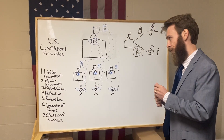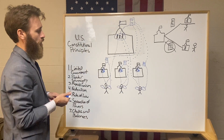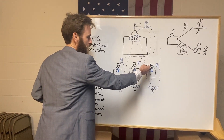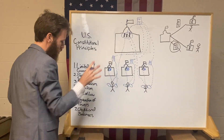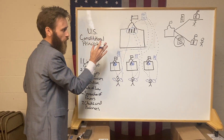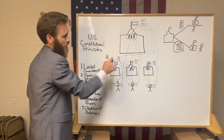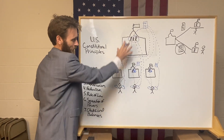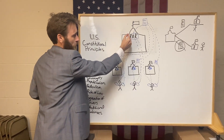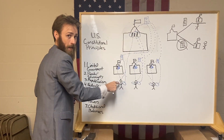Number six is the separation of powers. The federal government received a limited amount of power from the people via the states. Even though they don't have that much power, the founders were still skeptical they would use it properly. So here's what they did: even the power we do give them, we're going to separate it. We're going to cut it into three pieces — the three branches of government.